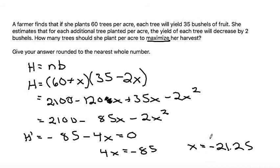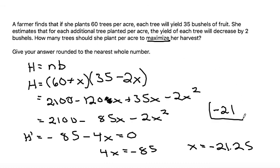So does that mean we need to reduce the number of trees by 21? It looks like we need to subtract about 21 trees. So that would mean planting 60 minus 21, which is roughly 39 trees per acre. That seems odd — let me check on this one and see if there's anything I need to change, but that's my tentative solution.